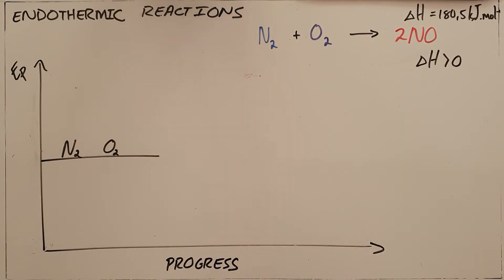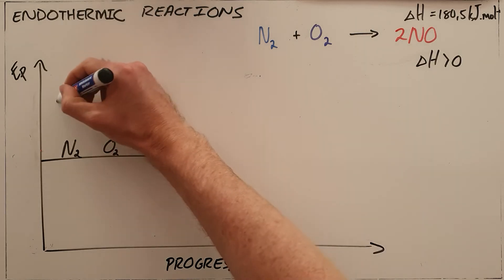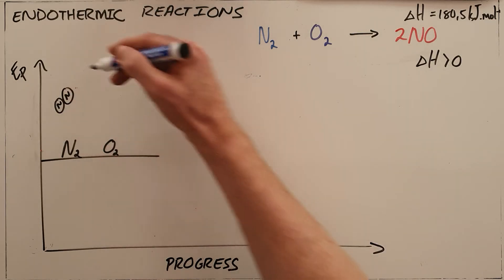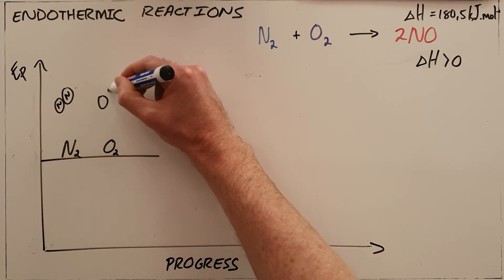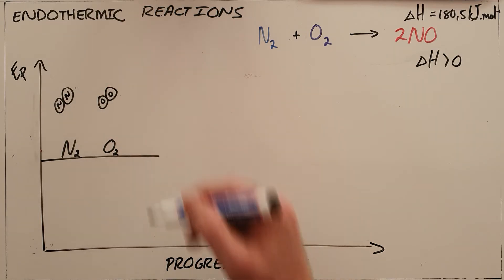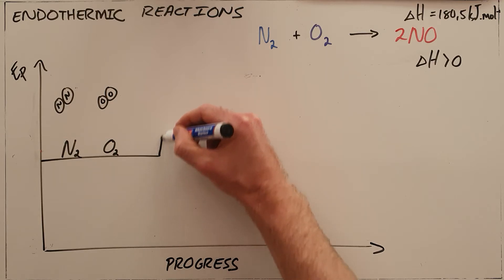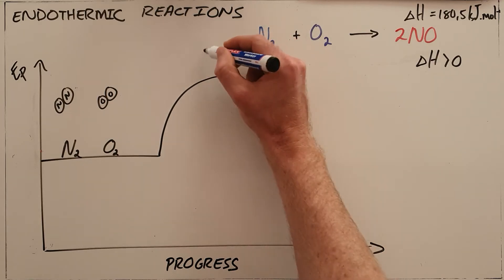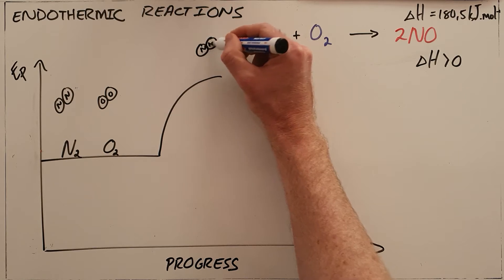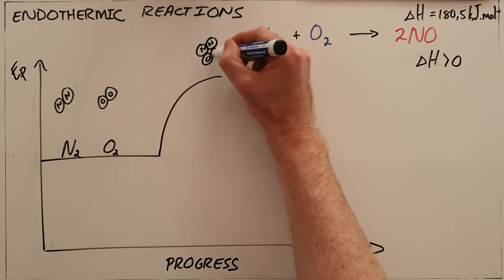We have our two nitrogen atoms that form a molecule and our two oxygen atoms that form a molecule. In order for them to react with each other, they must collide with each other. They must also collide in the correct orientation that allows the possibility of new bonds to form.